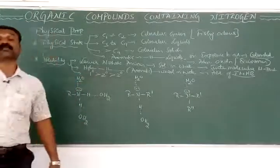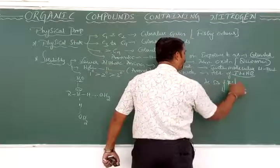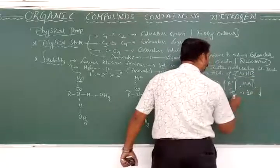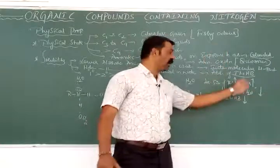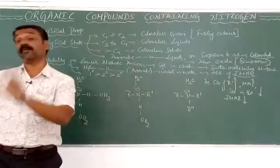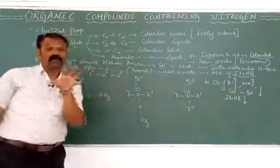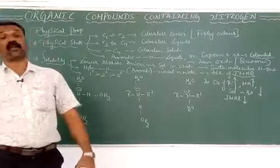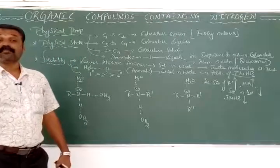Also, as the size of the alkyl (R) group increases, molecular mass increases, and therefore solubility in water goes on decreasing because the intermolecular hydrogen bonding goes on decreasing. As the alkyl group size increases, the space availability for intermolecular hydrogen bonding decreases. Lower members of amines are soluble in water, but higher members are insoluble. Amines are also soluble in organic solvents like ether, alcohol, or benzene.